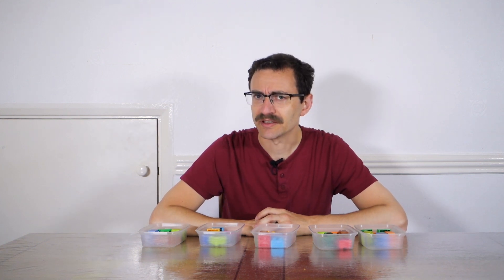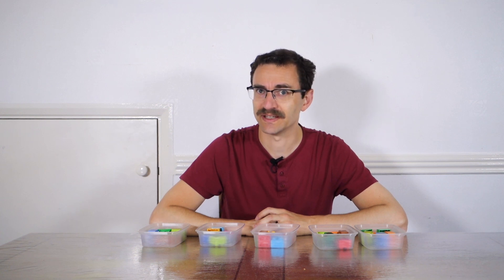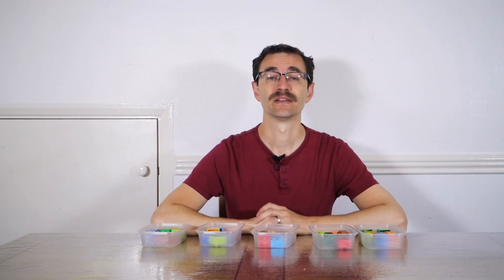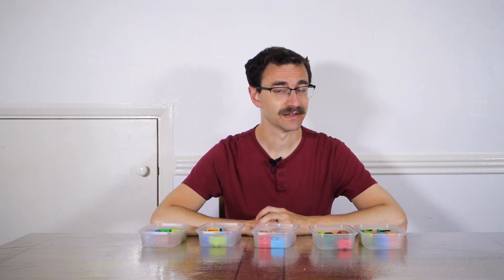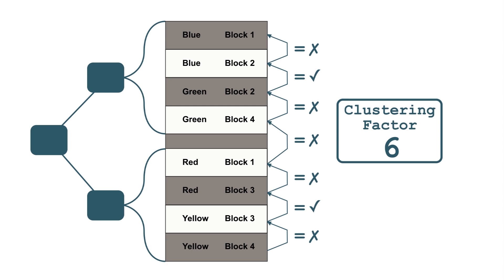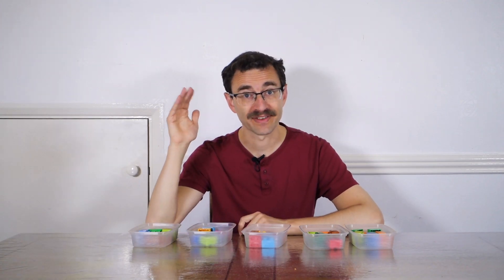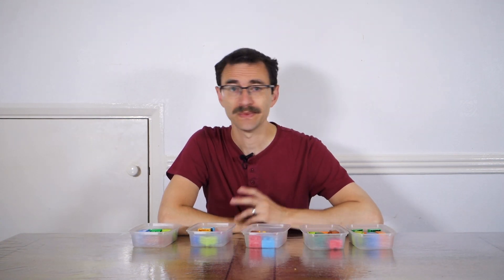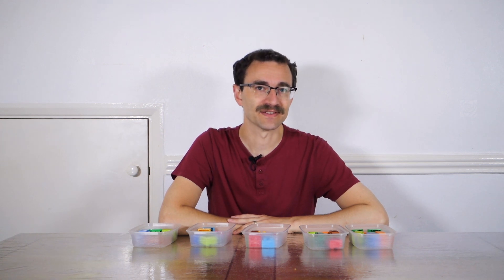So how does the database know how many blocks it's going to access using the index before running the query? Well the short answer is it doesn't — so it estimates via the clustering factor. The clustering factor is a counter that the database calculates when gathering statistics on a table. For each index it walks down the entries and for each entry asks: is this in the same block as the previous entry? If the answer is no it increments the counter; if it's the same it leaves it untouched. We end up with a value with a lower bound of the number of blocks in the table and an upper bound of the number of rows. So the higher the clustering factor, the more scattered throughout the table the rows are relative to the order in the index, and the less effective the index is likely to be.